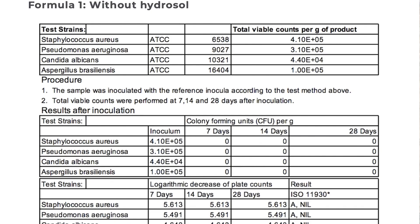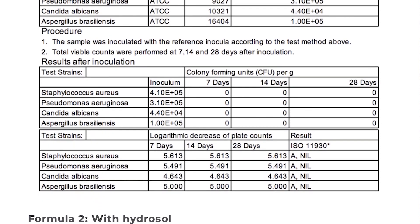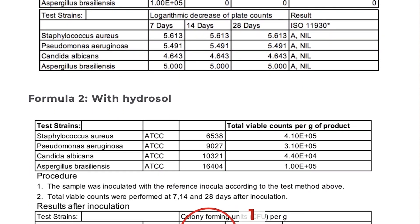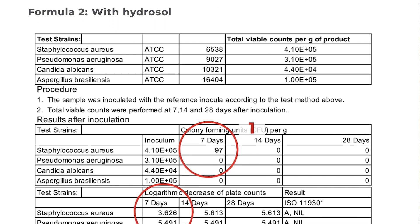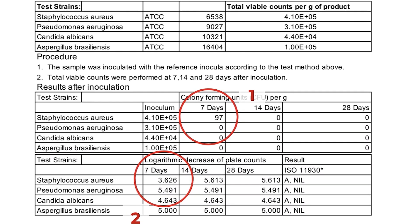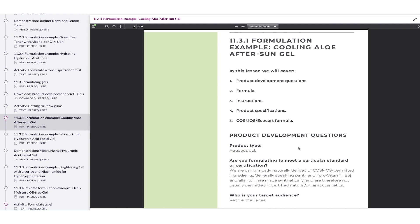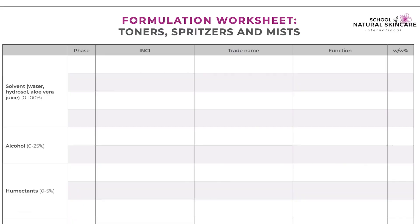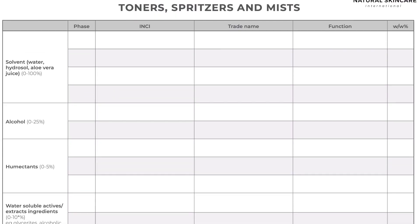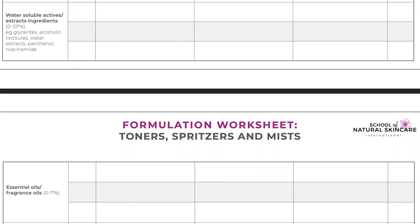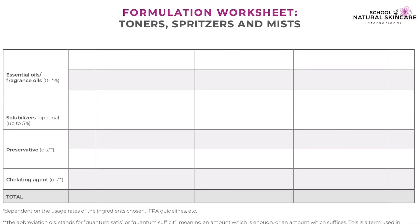We sent off several products for preservative efficacy testing and we share with you the results of the testing and what they mean. For every product covered in the course you'll receive a product development brief and formulation worksheet, which gives you a shortcut and guidelines for formulating your own product. Here is the worksheet for toners, spritzers and mists.